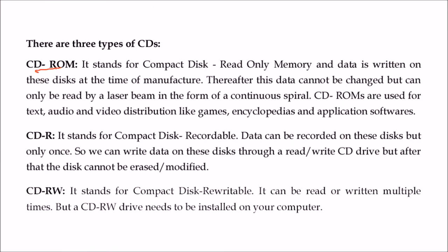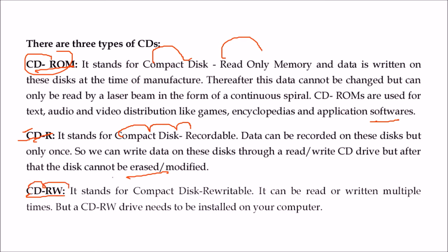There are three types of CDs: CD-ROM (Compact Disc Read Only Memory) — given by the manufacturer, you can only read it; used for audio, video, games, encyclopedias, and application software. CD-R (Compact Disc Recordable) — you can write only once and cannot modify or erase data again. CD-RW (Compact Disc Rewritable) — you can read, write, and rewrite. You need a CD-RW drive in your computer to use CD-RW discs.